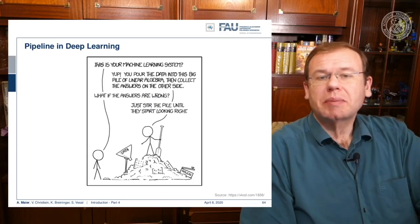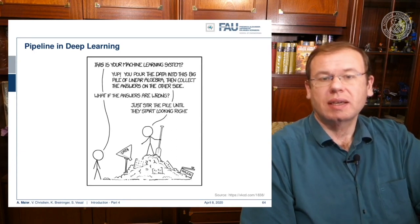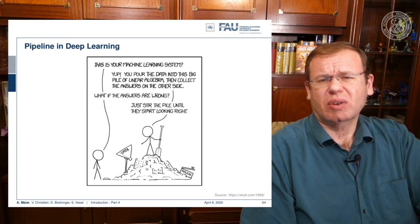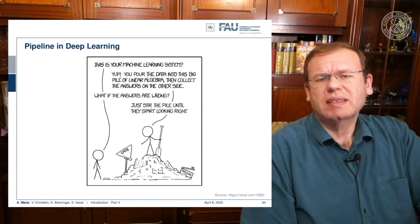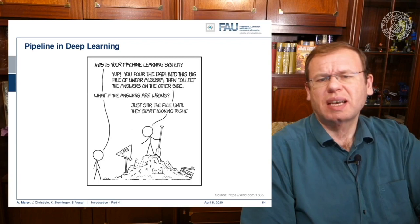But I think this is very difficult for normal people to understand — they would not know what they are looking at. What many people think about how big data processing works is shown in the small figure. This is your machine learning system: pour the data into this big pile of linear algebra, then collect the answers on the other side. And what if the answers are wrong? Just stir the pile until they start looking right.